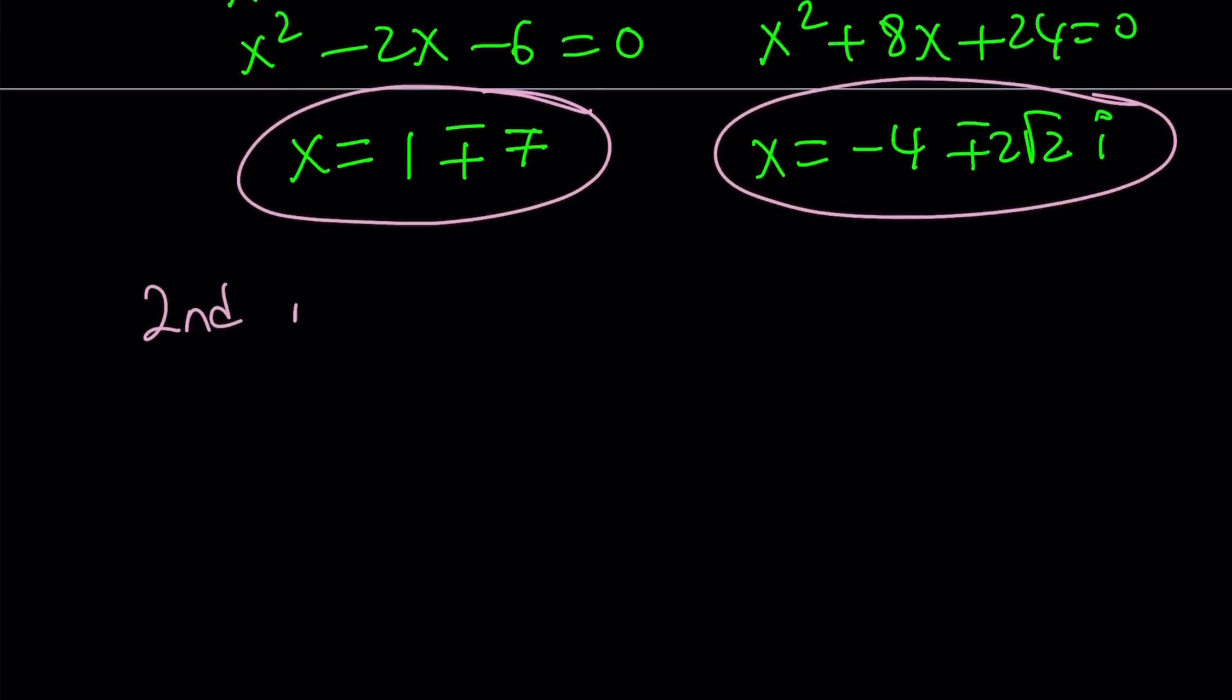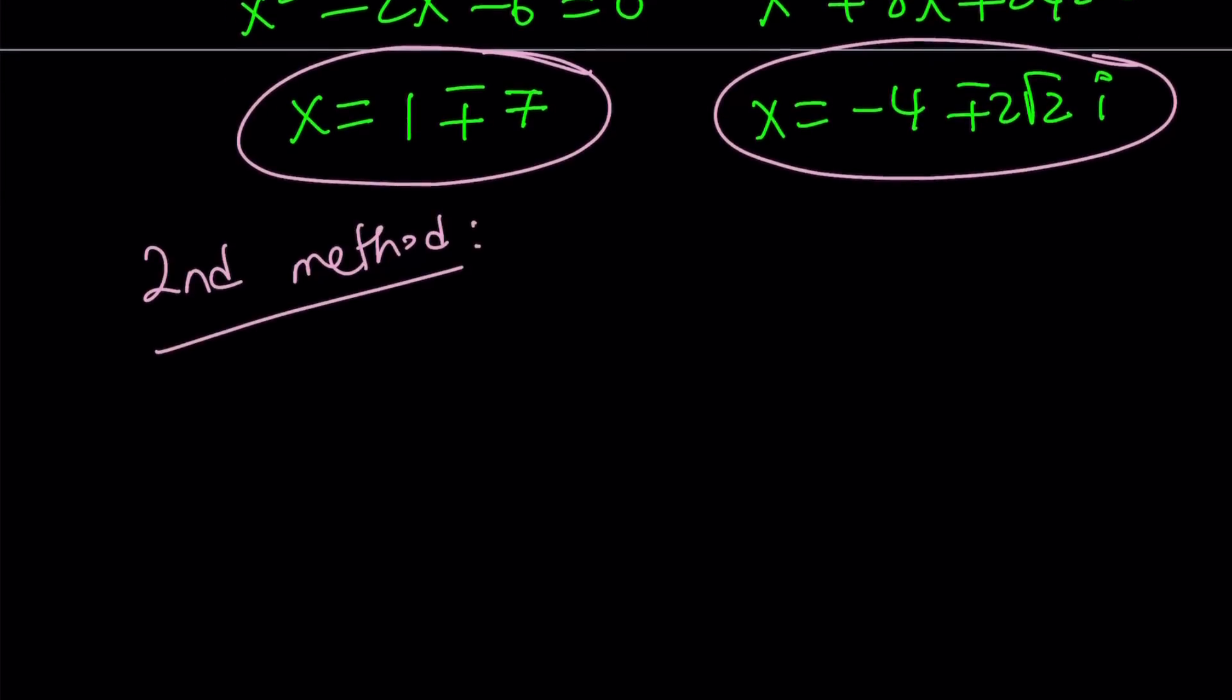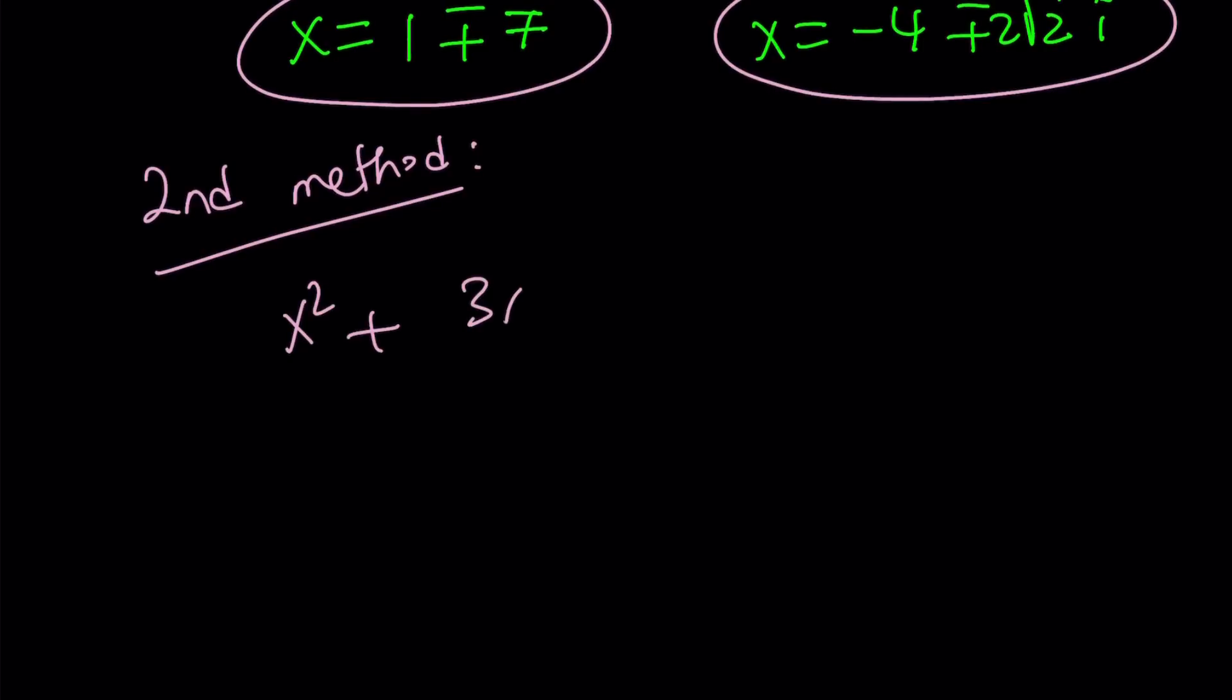Let's go ahead and take a look at the second method. And then I'd like to show you the graph. For my second method, I'm going to approach this from a different angle. Again, let's write it as a sum of two squares, just like before.